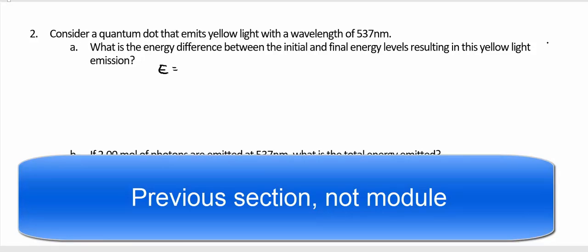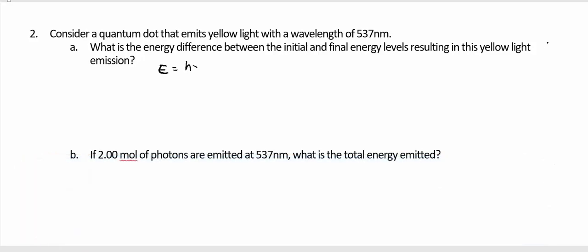E equals H nu. But in this case, what I'm going to do is show you how to combine it with this equation, C equals lambda nu. So what I'm going to do is use this one to solve for nu. So nu is equal to C over lambda. And then I'm going to substitute. So E equals H C over lambda.